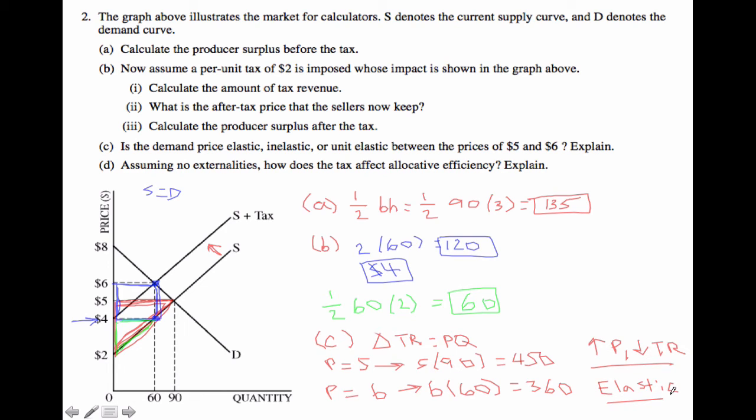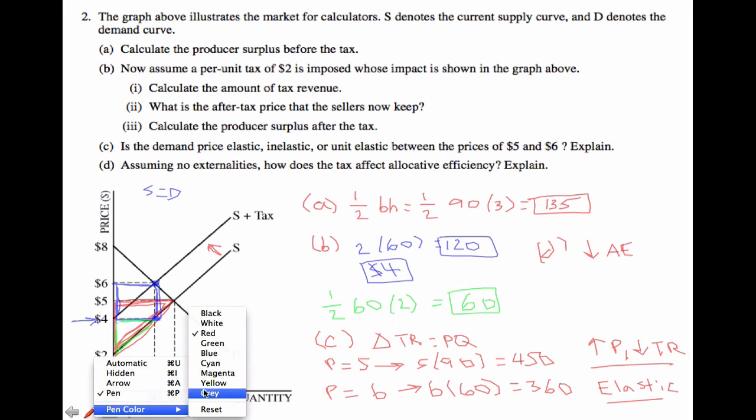So now let's think about part D, which is assuming no externalities, how does the tax affect allocative efficiency? Well, in this case, what we know is that as we think about the effect of this tax, we are actually decreasing allocative efficiency. And the reason why we know this is because there's a deadweight loss that is created as a result of the tax. So if we think about it, this is the deadweight loss as a result of the tax.